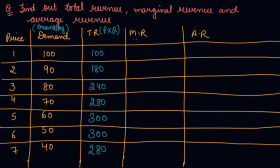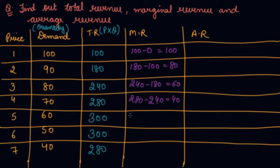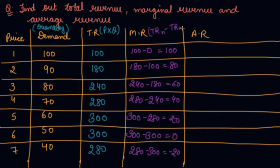From TR we can find marginal revenue using the formula MR = TR(n) minus TR(n-1). At 0 output TR is 0, so first MR is 100. Then 180 minus 100 is 80, 240 minus 180 is 60, continuing down: 40, 20, 0, and 280 minus 300 is minus 20. So marginal revenue is calculated as the change in successive TR values.